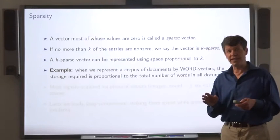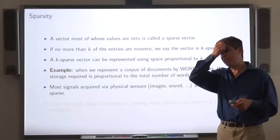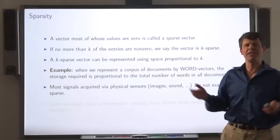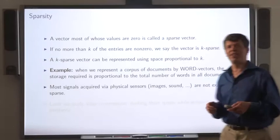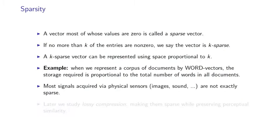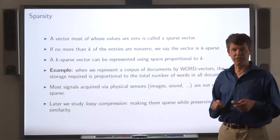Now, most signals acquired using physical sensors such as images or sound are not sparse coming in. But there are ways of achieving a sort of artificial sparsity by suppressing some of that signal. That's the idea of lossy compression and we'll get to that later in the course.